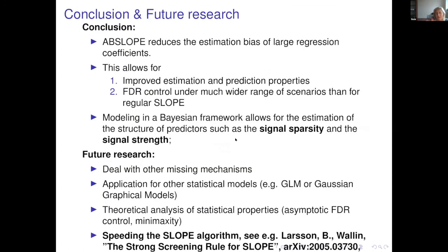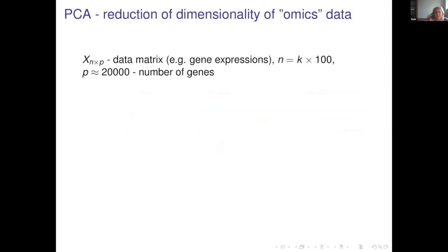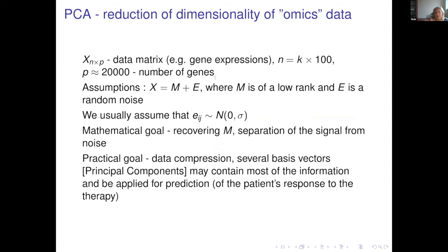There are still many things to do — speeding up the SLOPE algorithm and extending the methodology in many directions. We also have a method just published for subspace clustering: when you have unsupervised learning and want to cluster variables, the assumption is variables come from low-dimensional spaces. Instead of PCA on the whole dataset, we cluster variables and apply PCA within each cluster, assuming each cluster is low-dimensional. We have a package and an article with theoretical guarantees, and are working towards applications for building predictive models from gene expression data.